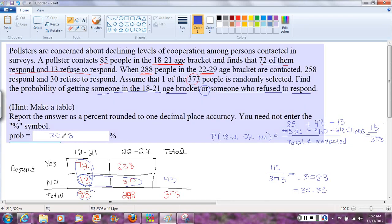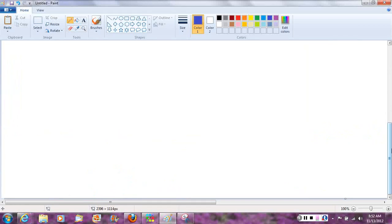So based on the information in that paragraph, we'd say if we randomly, of all the people surveyed, what percent were either in the 18 to 21 age bracket or refused to respond, it would be 30.8%. If we randomly picked one person from this table, there's a 30.8% chance that they're either 18 to 21 or they said no.